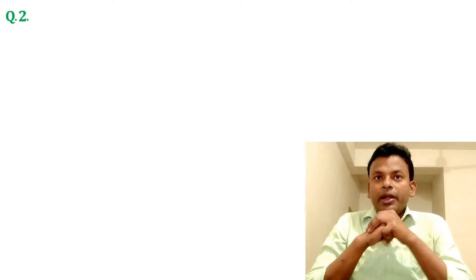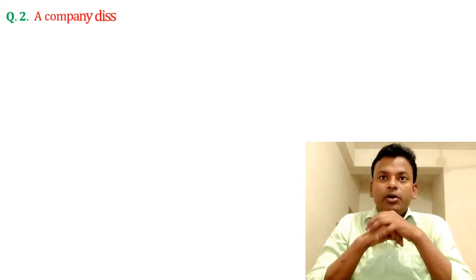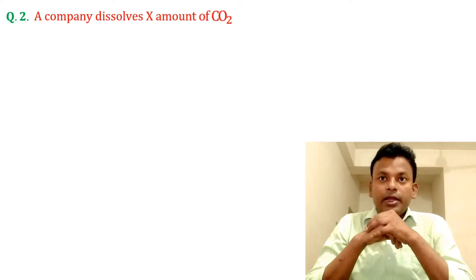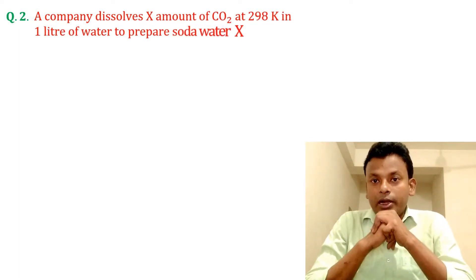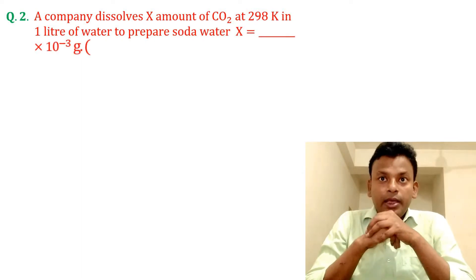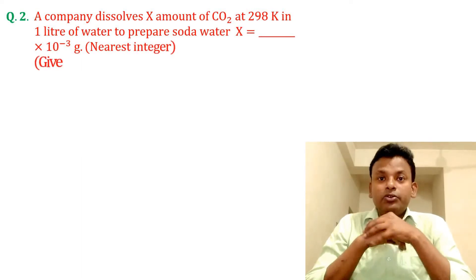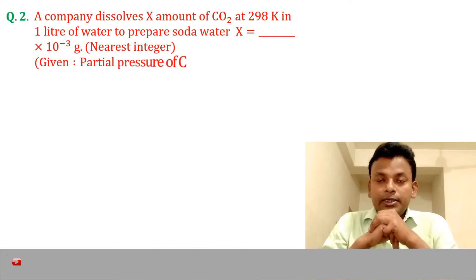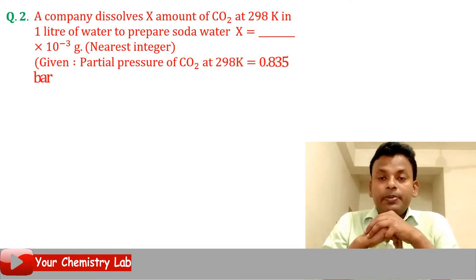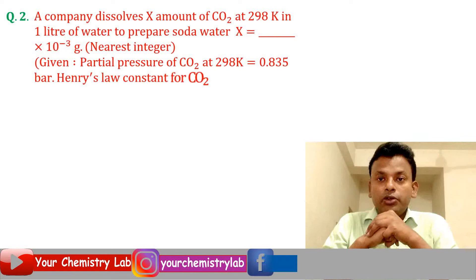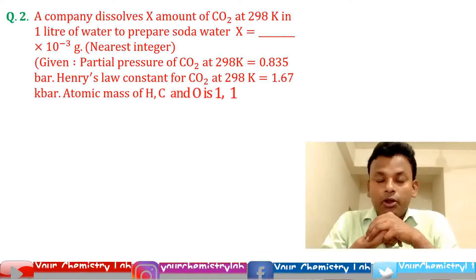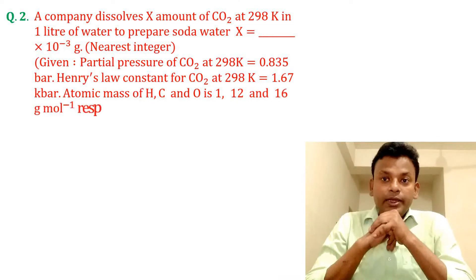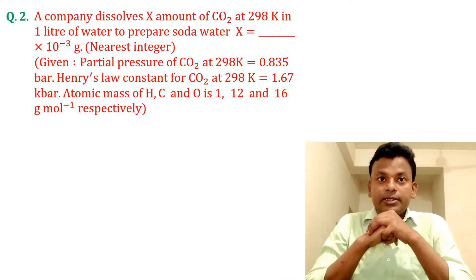Question two: A company dissolved x amount of carbon dioxide at 298 Kelvin in one liter of water to prepare soda water. x equals dash × 10⁻³ gram (nearest integer). Given: partial pressure of CO₂ at 298 Kelvin equals 0.835 bar, Henry's law constant for CO₂ at 298 Kelvin equals 1.67 kilobar. Atomic masses are given.